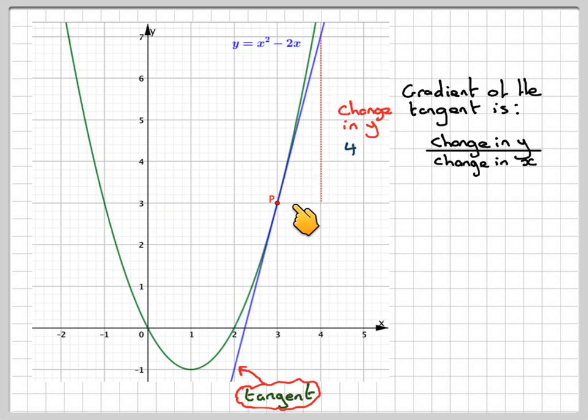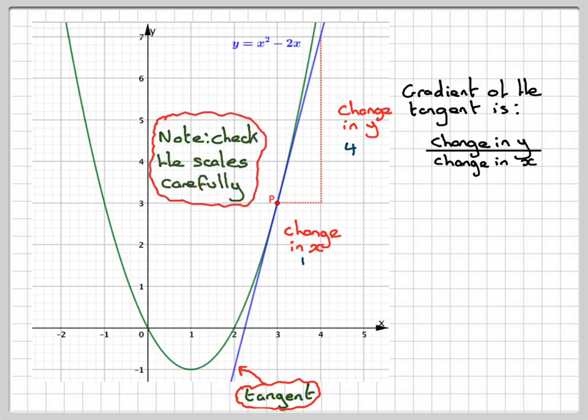And the change in X will be that one there, which will be 1 in this case. Now, you also need to be particularly careful to note whatever scale is on either of the axes. Here we have the same scale, but not always. So check the scales carefully when you are doing this.